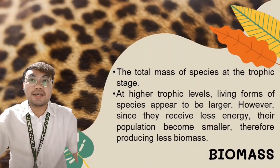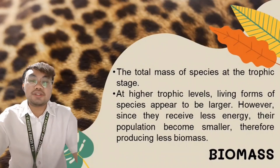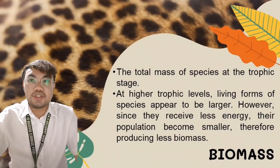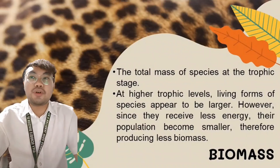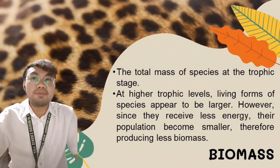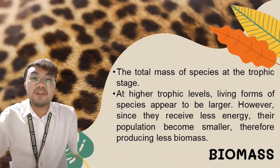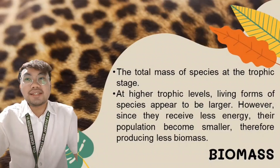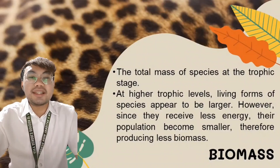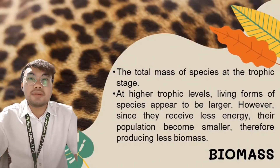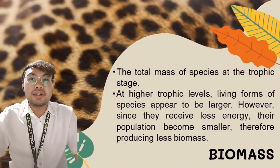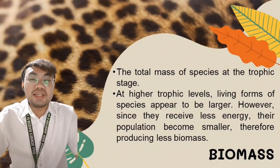Biomass is defined as the total mass of species at a trophic stage. At higher trophic levels, living forms of species appear to be larger. However, since they receive less energy, their population becomes smaller and therefore produces less biomass.